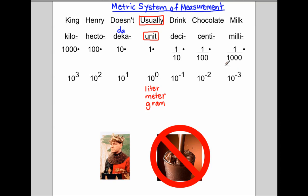Now, once we understand this and we memorize KHDUDC M - King Henry doesn't usually drink chocolate milk - once you memorize that, we're able to begin to convert measurements. Convert the units. Let's see how this is done.